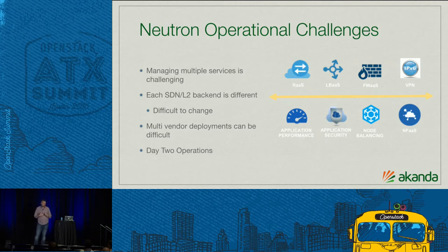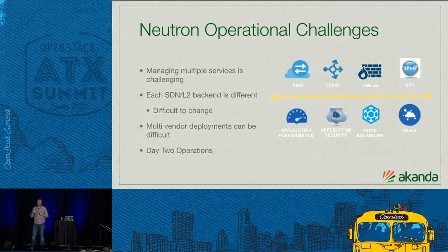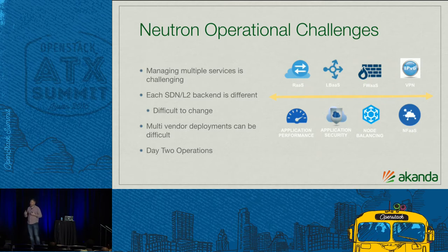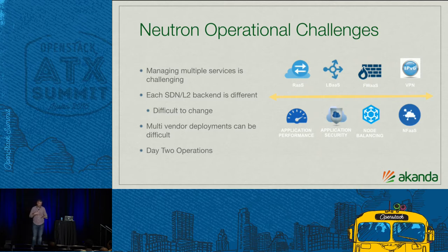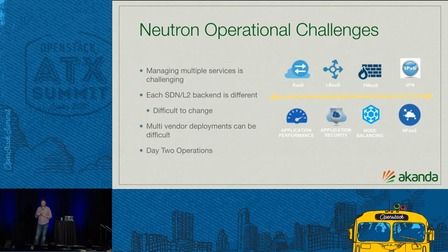When you're running a cloud, you're going to have multiple services. Each SDN L2 is going to be a little bit different and they're kind of difficult to change. If you take a look at Neutron like ML2, you can change some bits. But if you have a monolithic driver, it can be a little bit more interesting if you're changing your provider over time. Services and vendors were going to evolve over time — it's just a fact of life when running in operations. And really day two matters.